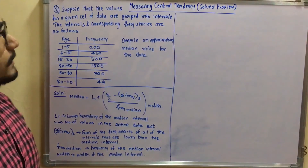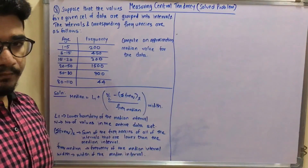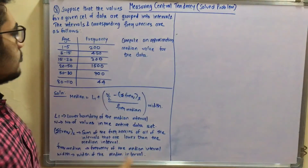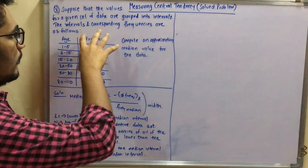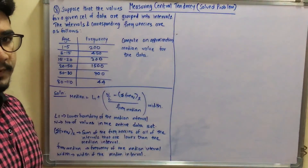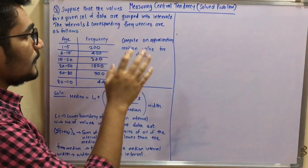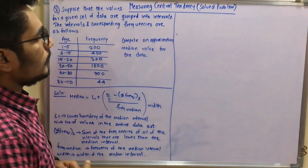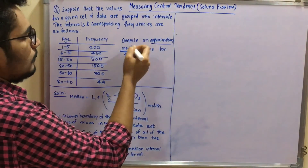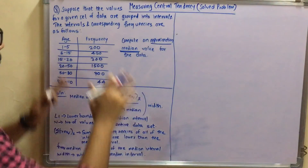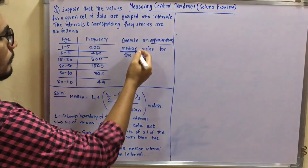The problem says: suppose that the values for a given set of data are grouped into intervals, and the intervals and corresponding frequencies are given in a table — you have age and frequency, showing how many people fall in each age category. You have to compute an approximation of the median for this data set. Just focus on calculating the median.